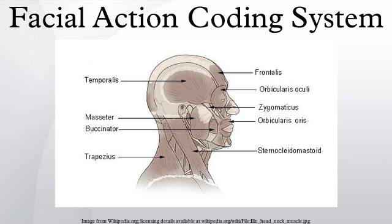FACS defines AUs, which are a contraction or relaxation of one or more muscles. It also defines a number of action descriptors, which differ from AUs in that the authors of FACS have not specified the muscular basis for the action and have not distinguished specific behaviors as precisely as they have for the AUs.